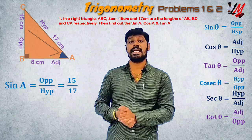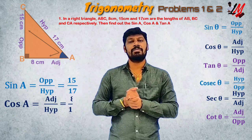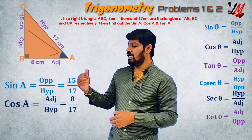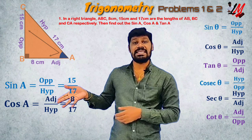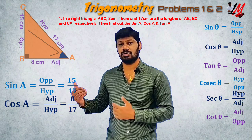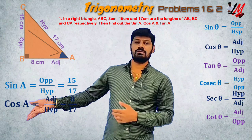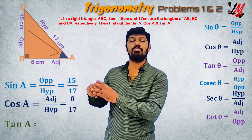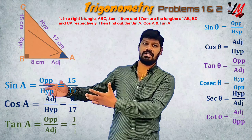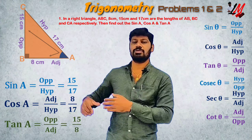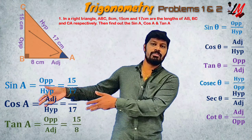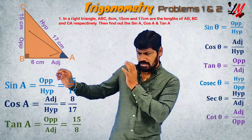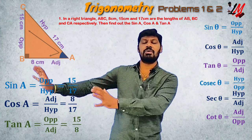Also, cosine A is adjacent by hypotenuse, which is nothing but 8 by 17. And tan A is opposite by adjacent, so tan A equals 8 by 15.